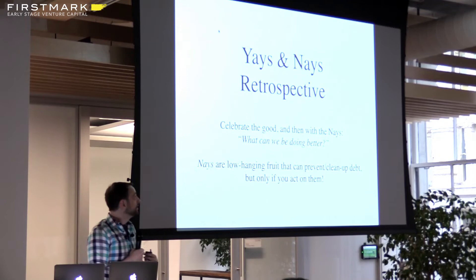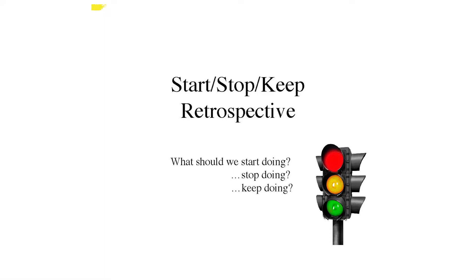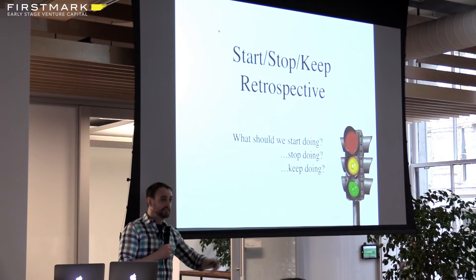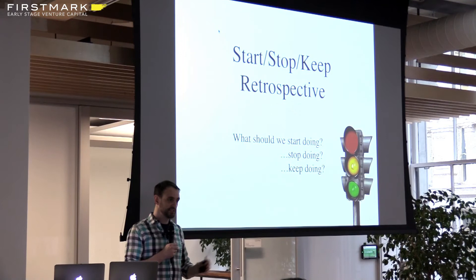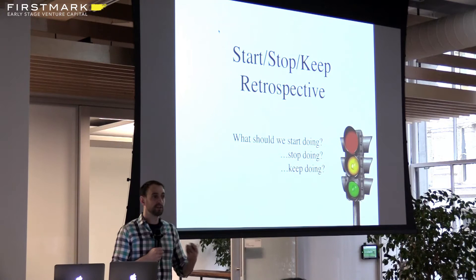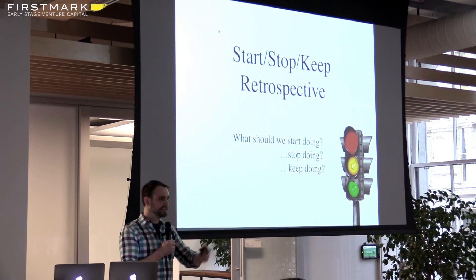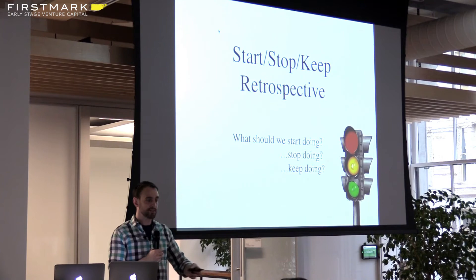The start, stop, keep retrospective is actually really useful and easy to do. Grab some post-it notes; if you've got remote team members, use a Google form. Ask them: what should we start doing, what should we keep doing, what should we stop doing? See if there are trends — can you group things and identify patterns? Pick just one, two, or three things out of this. You'll get a list way longer than that, but if you do it monthly or quarterly and fix the top couple of things, it can make a real difference. One team I worked with didn't have a continuous integration server, and this gave permission to go and do it — that permission is actually really valuable.